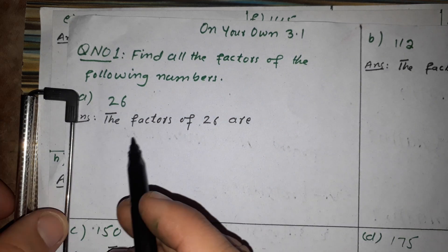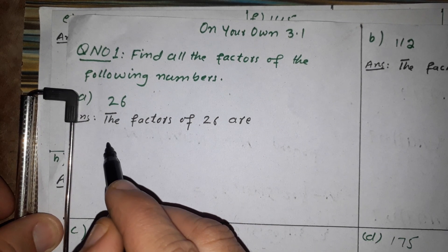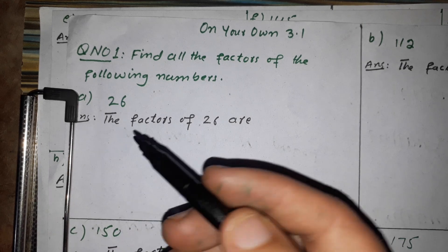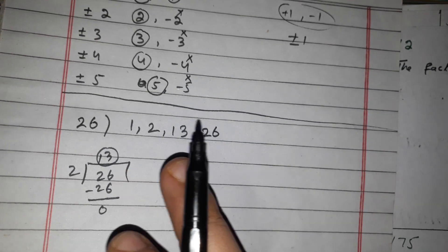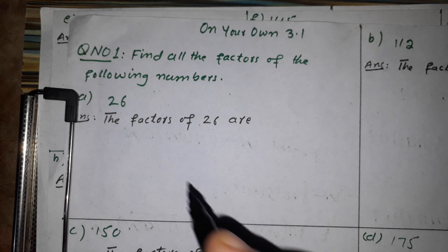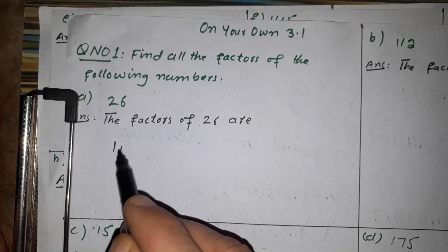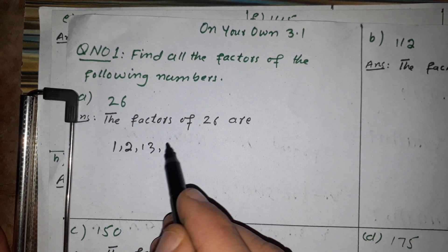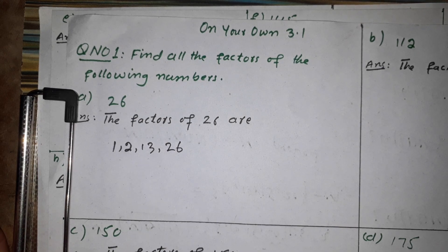So the factors of 26 are: 1, 2, 13, and 26. One, two, thirteen, and twenty-six are the factors of 26.